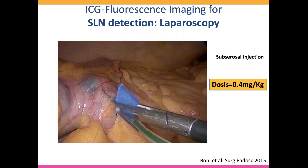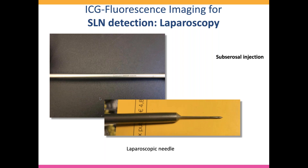Here is an example of how it works practically, showing a publication by Bonnie using the technique by laparoscopy with a small needle. In the right colon, it's easy to do without too much leakage. But in the left colon, if you have leakage, everything becomes fluorescent and you can't see anything. I prefer using a laparoscopic needle for subserosal injection because you can really aspirate very easily when withdrawing the needle from the subserosal, avoiding leakage.